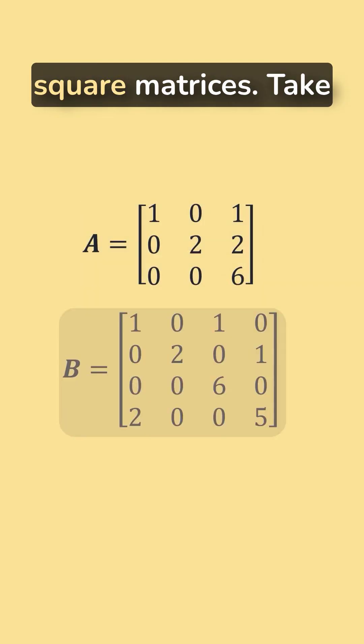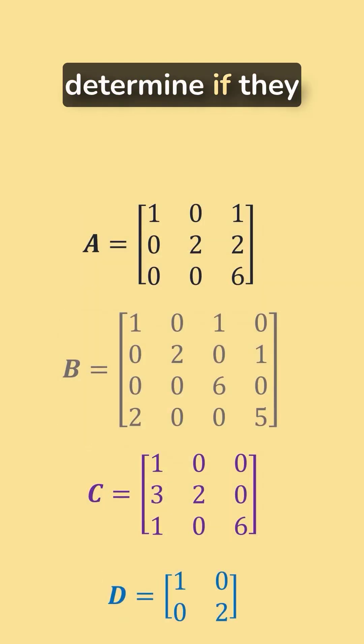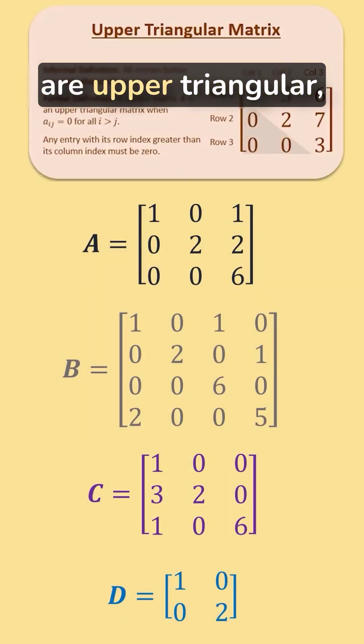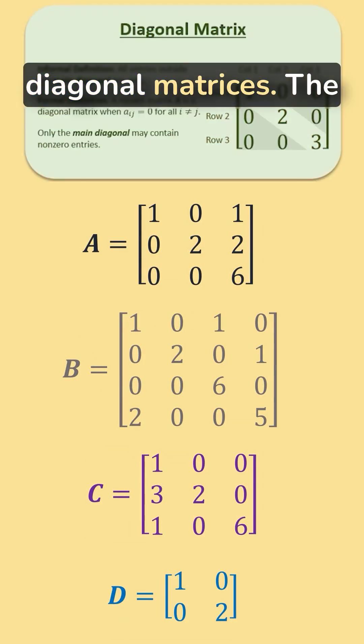Here are four square matrices. Take a moment to determine if they are upper triangular, lower triangular, or diagonal matrices.